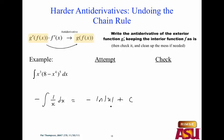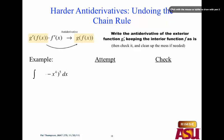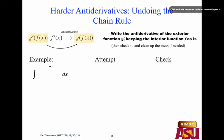Let's do some more examples. Oftentimes you'll see these hidden as fractions. Here's one — a quotient. We're used to the result of the chain rule being a product, but here it's a fraction. If we suspect this is undoing the chain rule, we've got to see this as a product. So we want to rewrite it: how can we rewrite sine of radical x over radical x as a product?